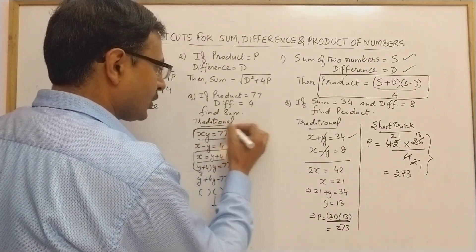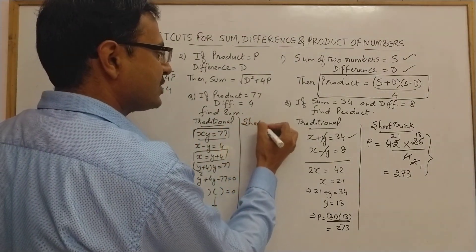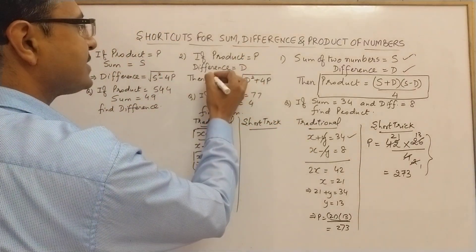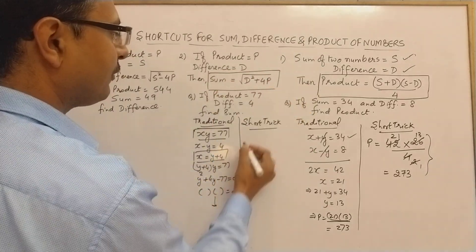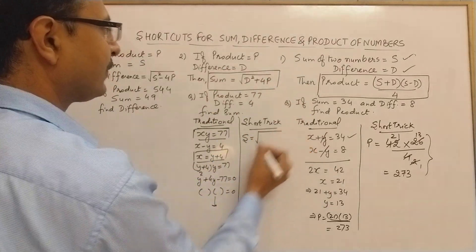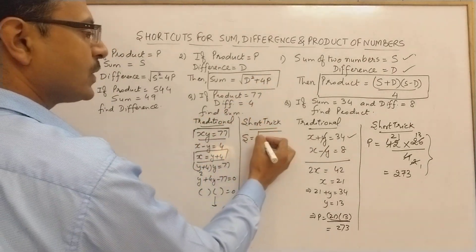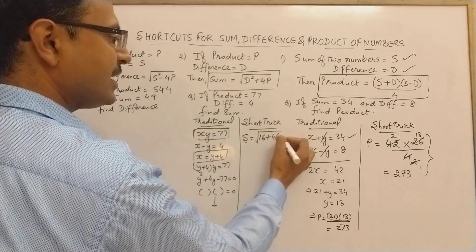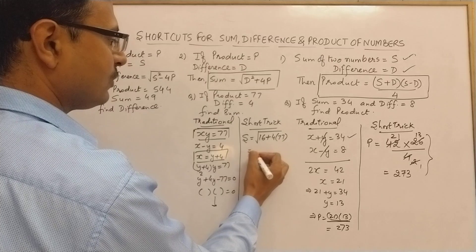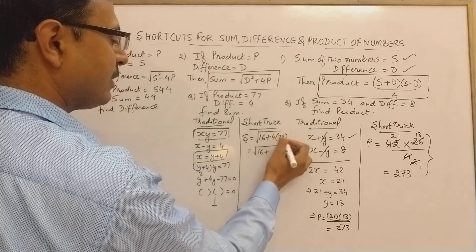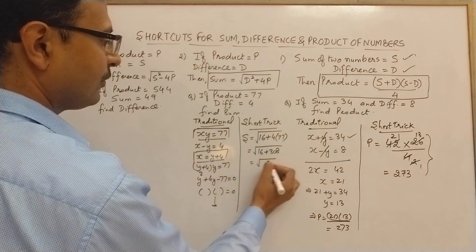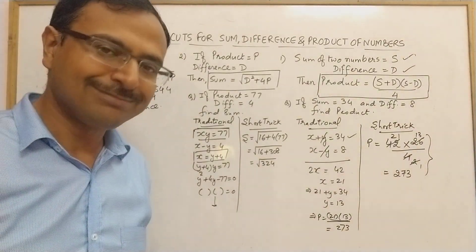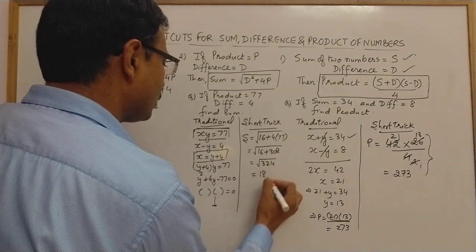The shortcut is very easy. Sum equals square root of (difference² + 4×product). That's √(4² + 4×77) = √(16+308) = √324 = 18. So the sum of the two numbers is 18.